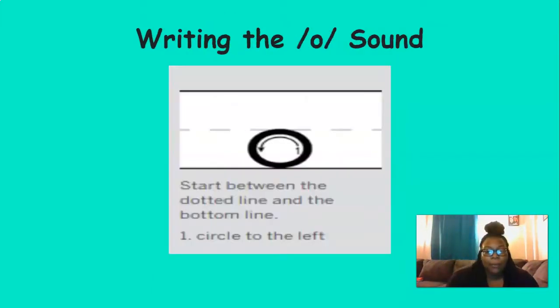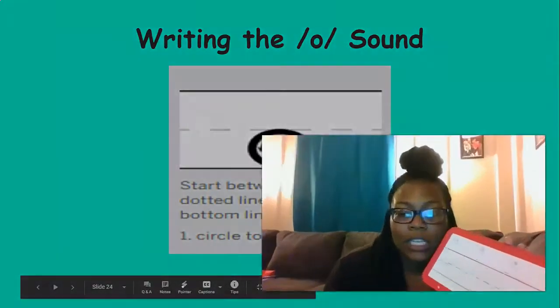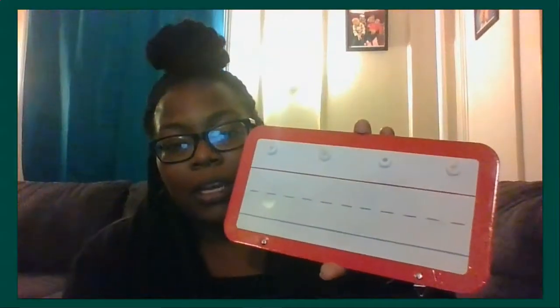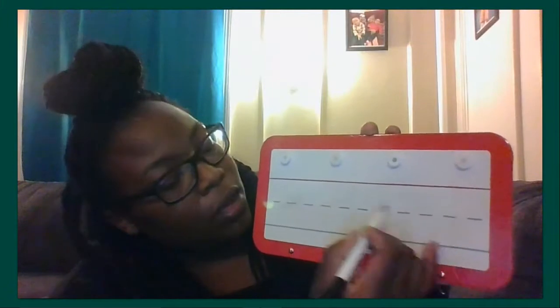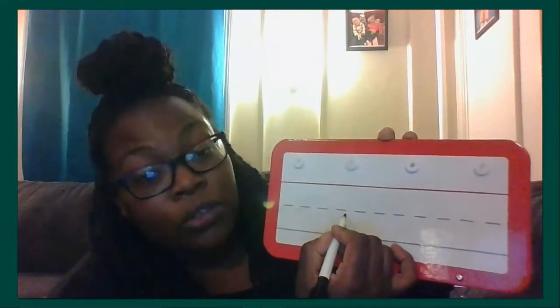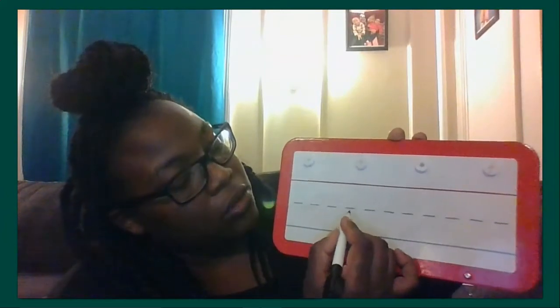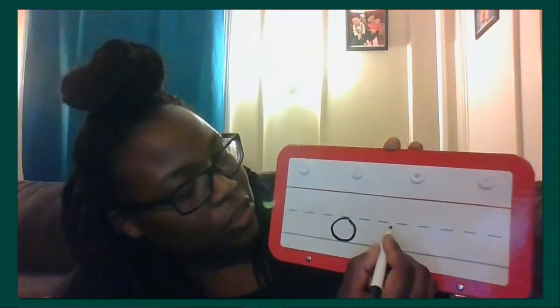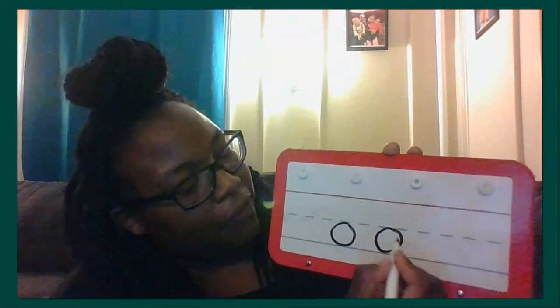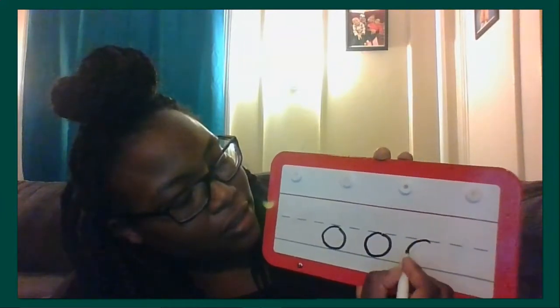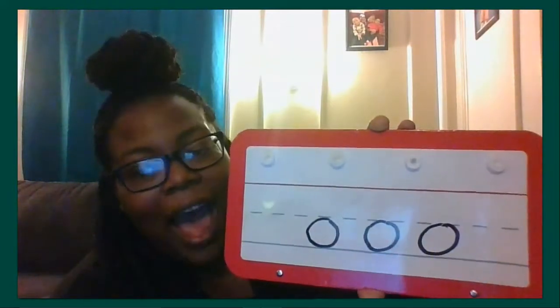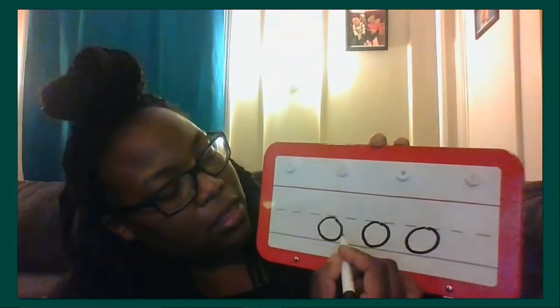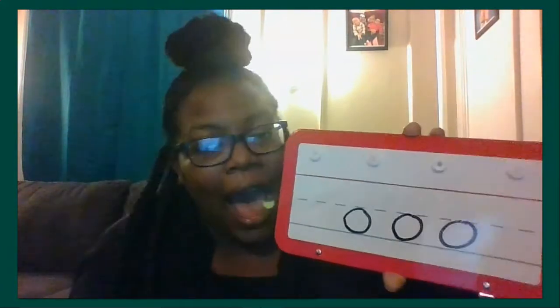All right. Now, it's time to practice writing the ah sound. So, I have my board. And I'm going to show you how to make the ah sound. And then, you'll get time to practice making it. Okay. So, here we have our dashed line in the middle. We're going to start here. And we're simply just going to circle to the left. And make sure it's closed. Just like this. Circle to the left. There's our ah. Let's try again. Circle to the left. One more. Circle to the left. Look at those ah sounds. You see how they're underneath the dotted line. The dashed line. Ah, ah, ah.